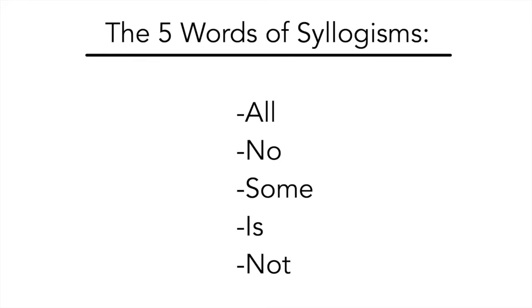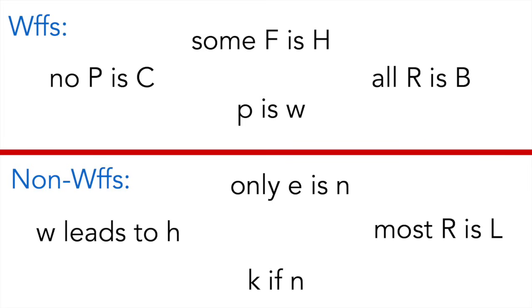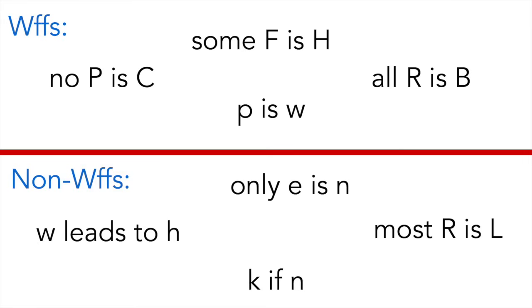And when you combine the letters that represent a thing with these words, you get stuff like all F is H, or no G is D. These are called well-formed formulas, but in class we just called them woofs for short. Here are some examples of woofs using syllogisms, and underneath them are some non-woofs. Notice how the non-woofs underneath use language that isn't limited to our five words.